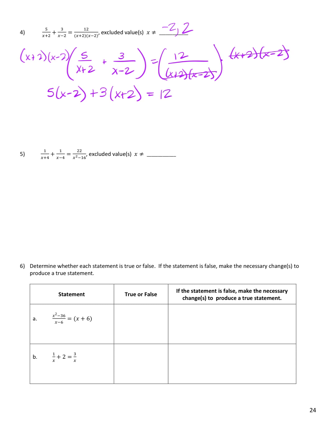Distributing and solving: 5x minus 10 plus 3x plus 6 equals 12. So 5x plus 3x is 8x, and negative 10 plus 6 is negative 4, equals 12. So 8x equals 16, meaning x equals 2. But that is a restricted value — I cannot plug x equals 2 into this equation. So this has no solution.